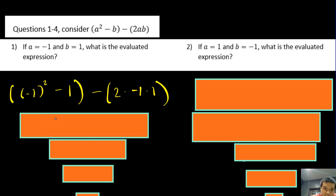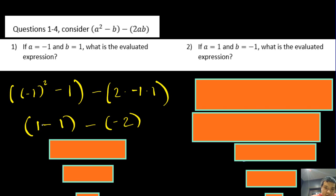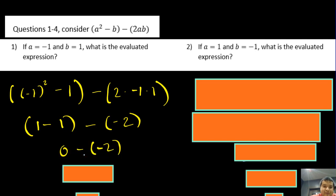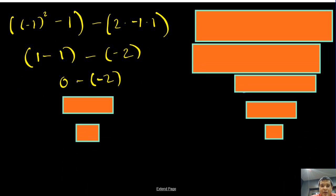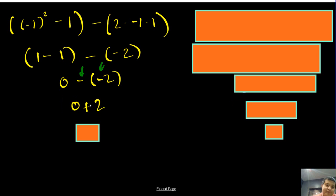Evaluating further: negative 1 squared turns into 1. For 2ab, we get 2 times negative 1 times negative 2, which is negative 2 times negative 2... wait — 2 times negative 1 is negative 2, times negative 2 is still negative 2. Then 1 minus negative 2 inside parentheses is 0, minus negative 2 becomes 0 plus 2, giving us a final answer of 2.